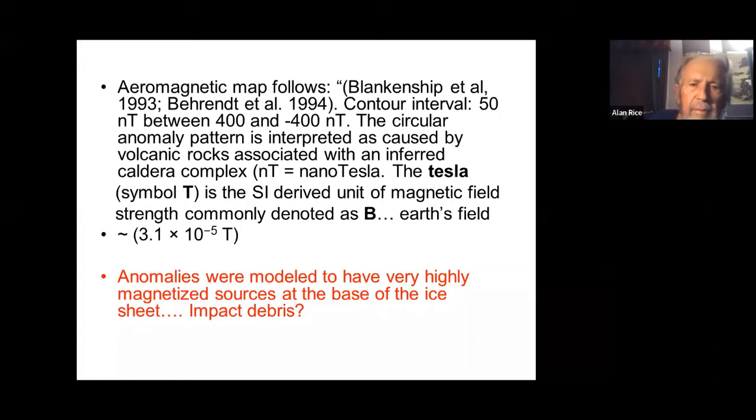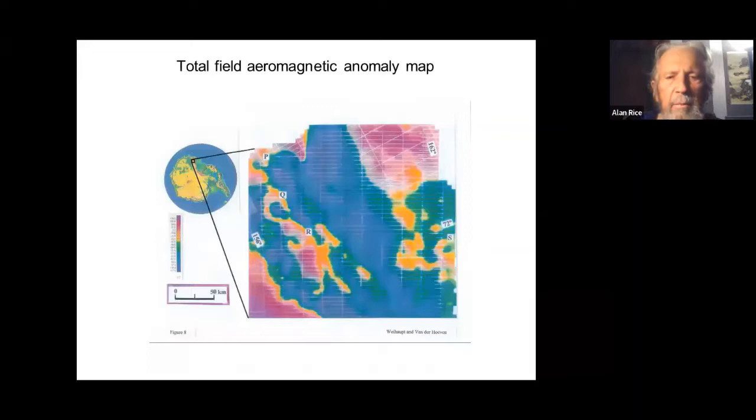An aeromagnetic map also applies the knowledge model to have a very high magnetized source at basal ice sheet. Impact debris—they found a number of these ground places. You see there's Q, P, R, and S. These are all considered impact sites.